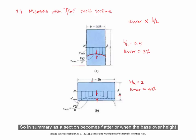In summary, as the section becomes flatter, or when the base over height ratio increases, the magnitude of errors actually becomes significant.